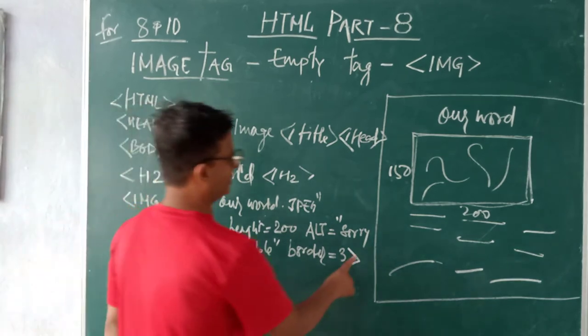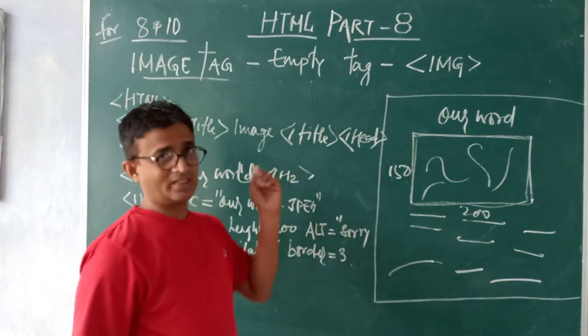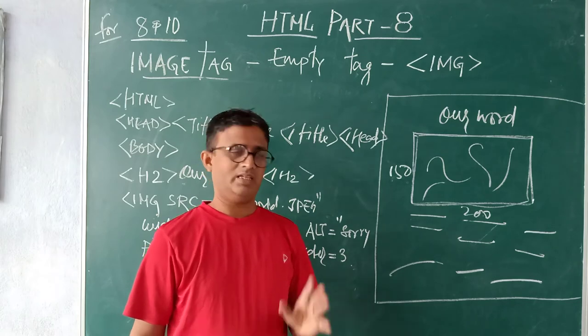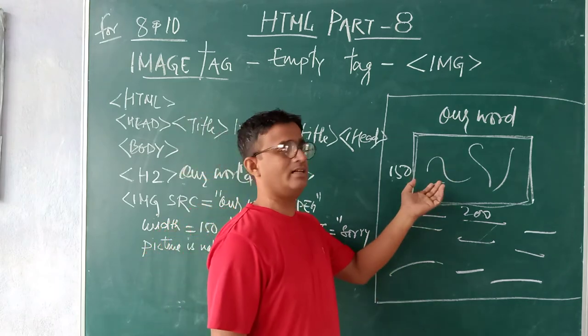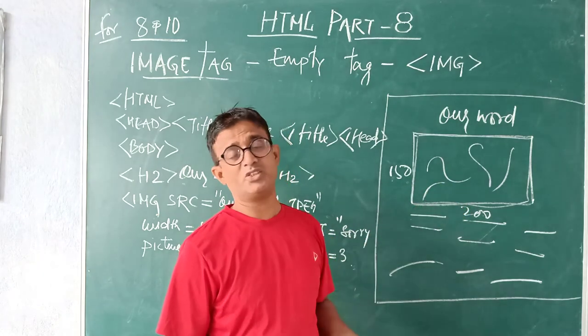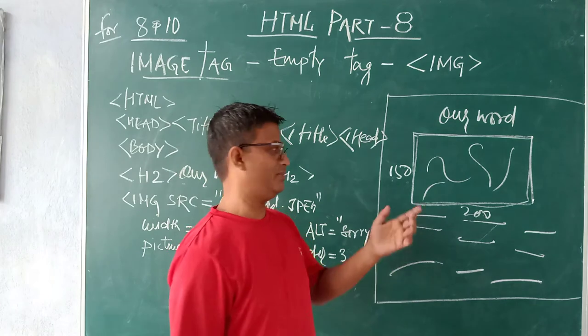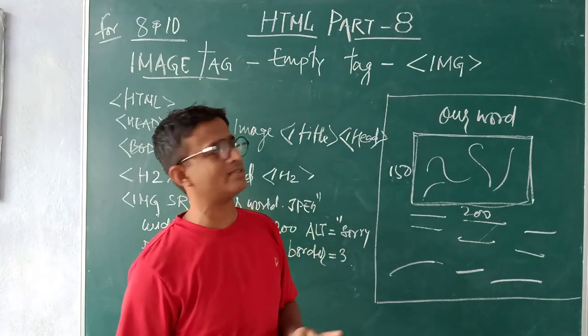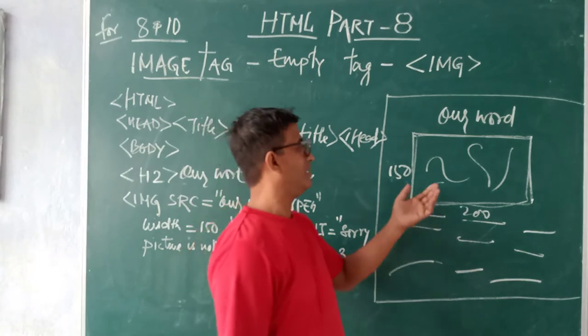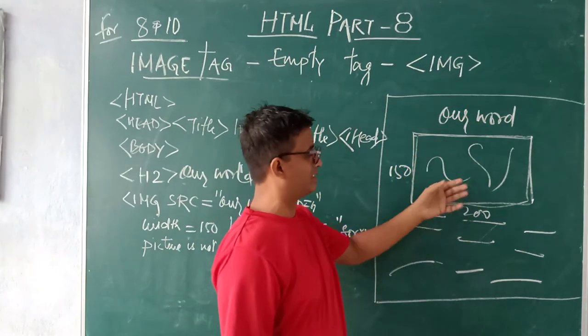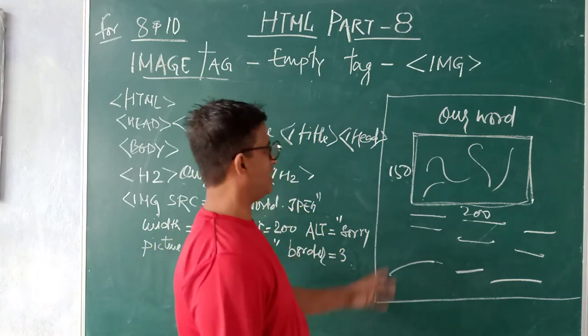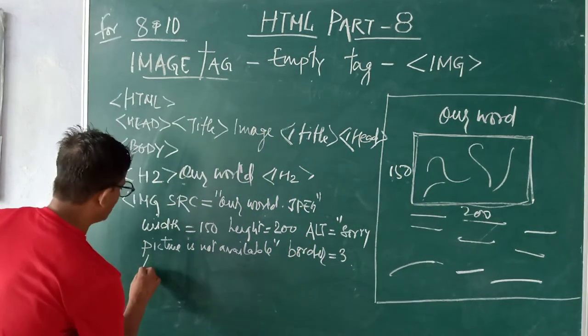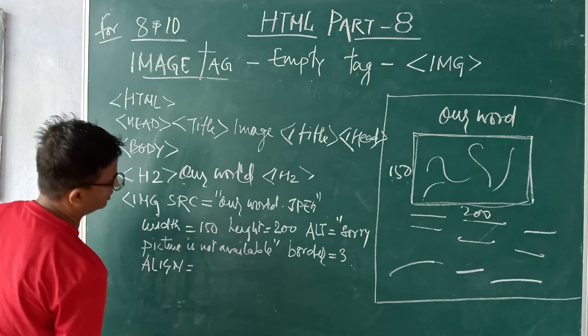One more thing I want to add that I have not discussed, that is align. Where you want to insert your image? If you want to insert your image in the center of this website, you will use align equals center. If you want to insert this image at the right side of your screen, you will type align equals right. Left side, align equals left. Align equals top at the top if you want to display, align equals bottom. It is in the center of my website, so I will write here align equals center.